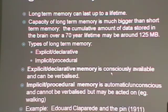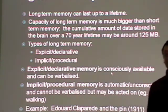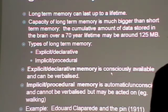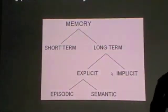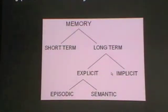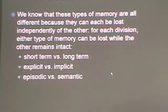Long-term memory, on the other hand, can last up to a lifetime. The capacity of long-term memory is much, much bigger than short-term memory. The cumulative amount of data stored in the brain over 70-year lifetimes may be around 125 megabytes. Long-term memory we can divide into episodic and semantic memory. We've covered now the main types of memory: short-term, long-term — long-term divided into explicit and implicit, explicit into episodic and semantic. And we know those types of memory are all different because they can each be lost independently of the other.